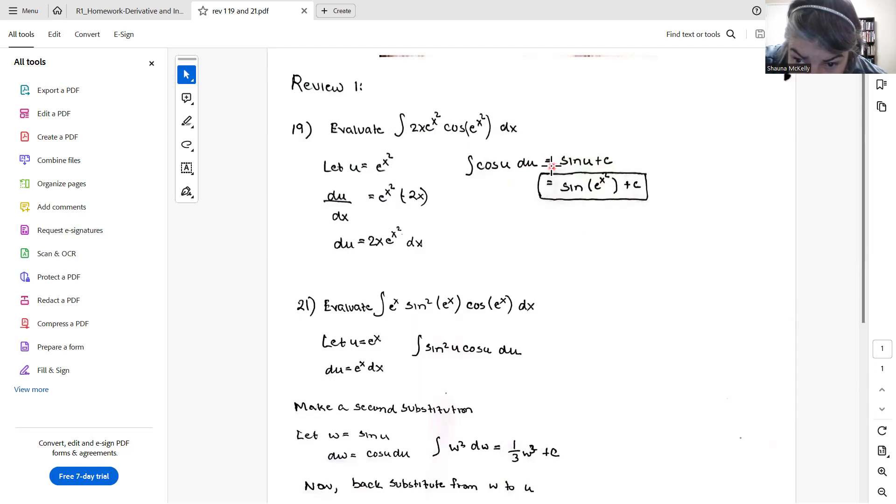The thing you have to remember here is that your integrand is in u, so you have to back substitute here because your original integrand was in x. Sine e^(x²) plus a constant. And that's how you integrate that.